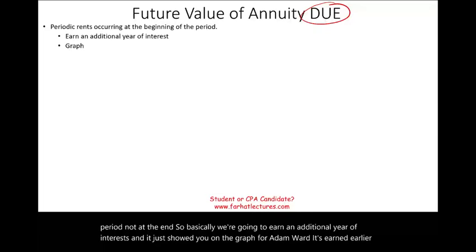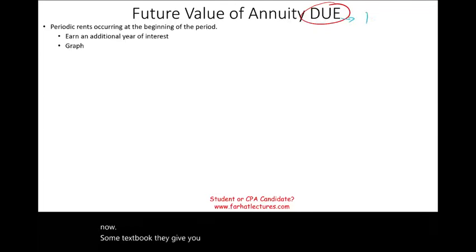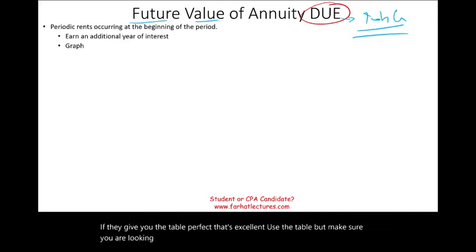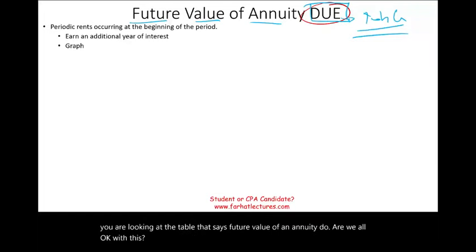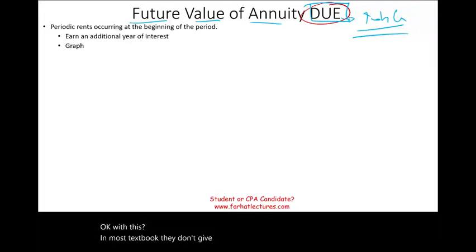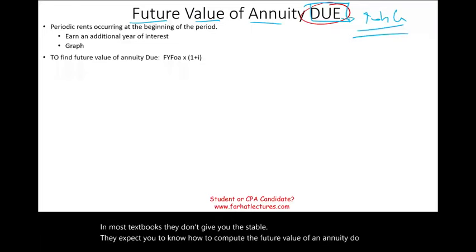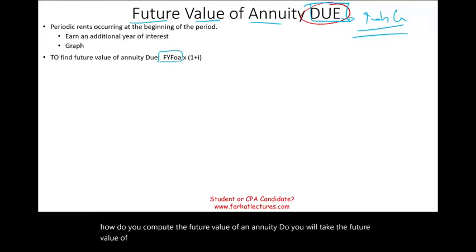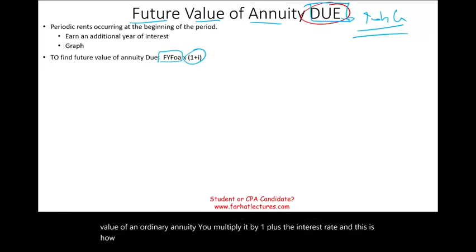In some textbooks they give you the future value of an annuity due table — if they give you the table, use it, but make sure you are looking at the table that says future value of an annuity due. In most textbooks they don't give you the table — they expect you to know how to compute it. You take the future value of an ordinary annuity and multiply it by (1 plus the interest rate). This is how you convert an ordinary annuity factor to an annuity due factor.